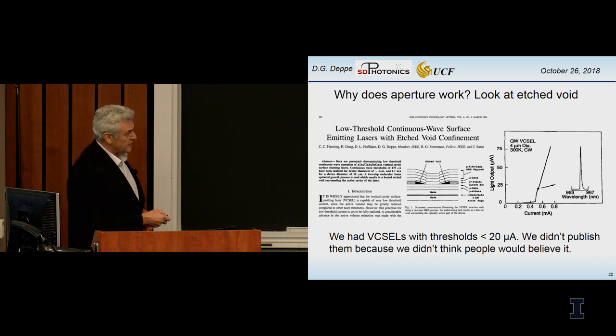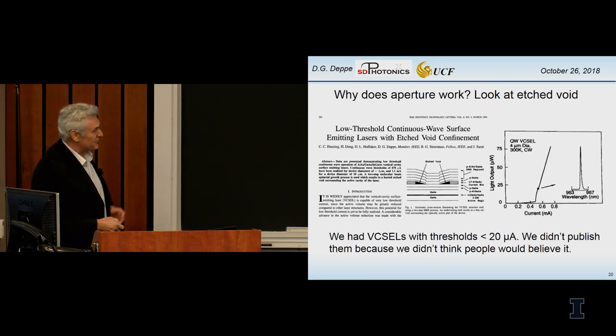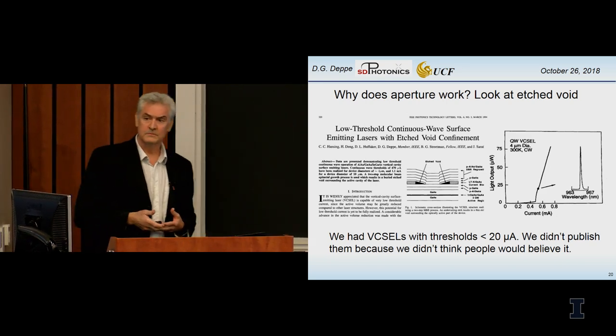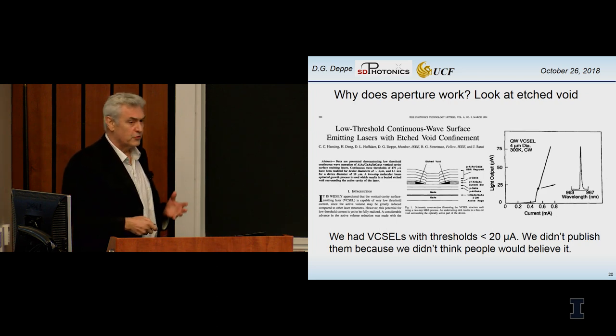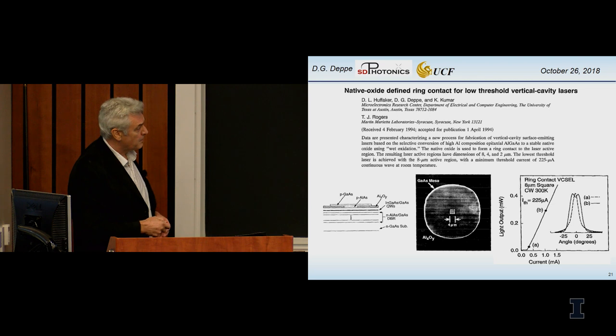One of the students showed it to me and he said, I over-etched it. Should I discard it or what should I do with it? And I said, go ahead and grow on it. Let's see what happens. When we made the VCSELs, they had a very remarkable property. This is not oxide yet, but we created those etched voids buried within the crystal. And when we measured the VCSELs, some didn't work and some had unbelievably low thresholds. We had some that were less than 20 microamps. I realized this was doing something. I thought, well, maybe that oxide will do the same thing. And it did.